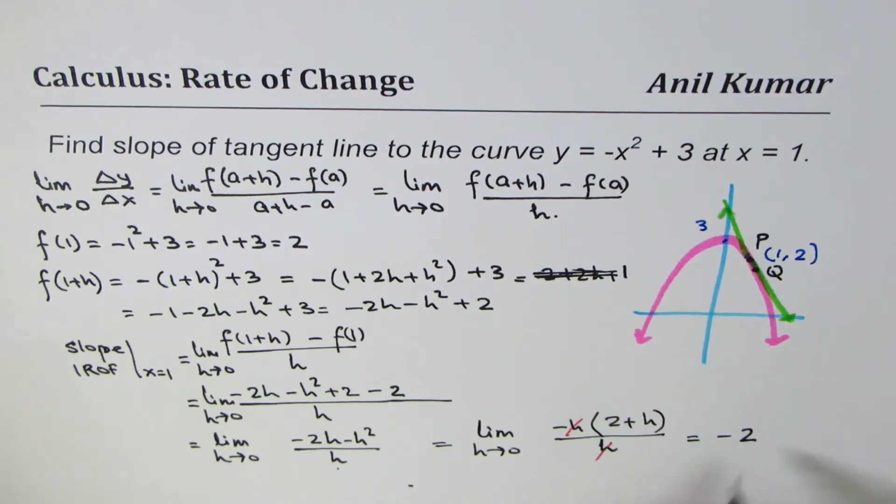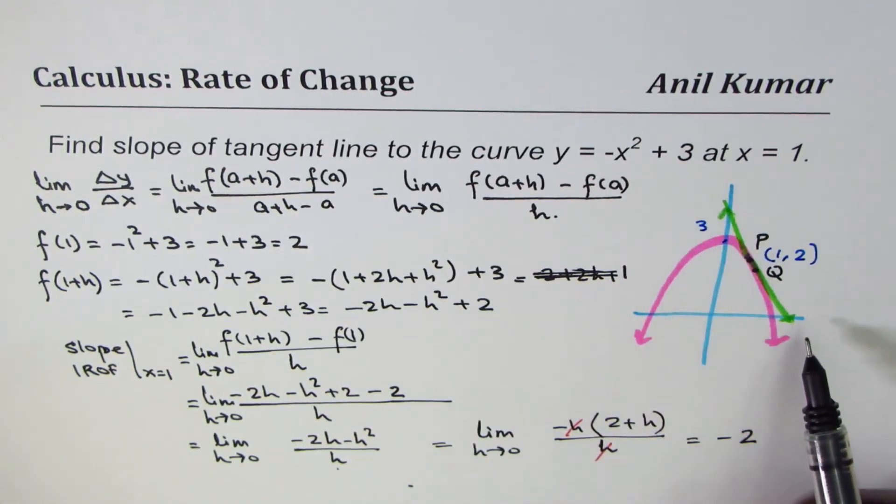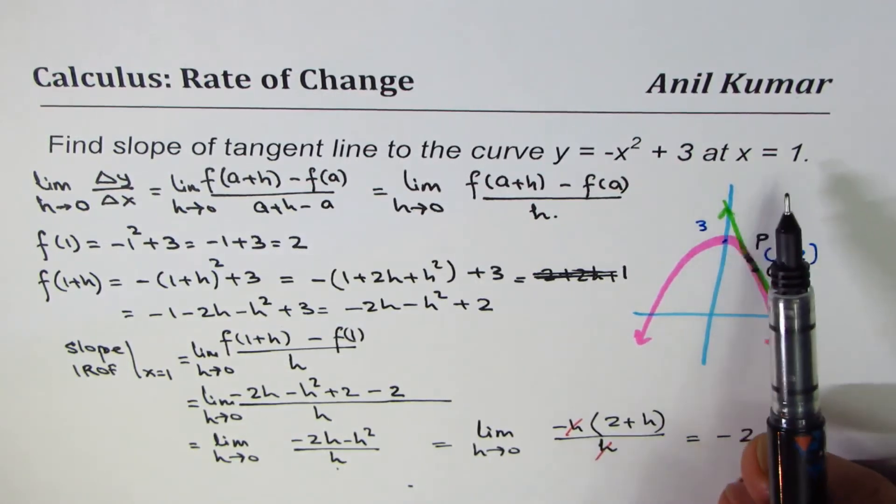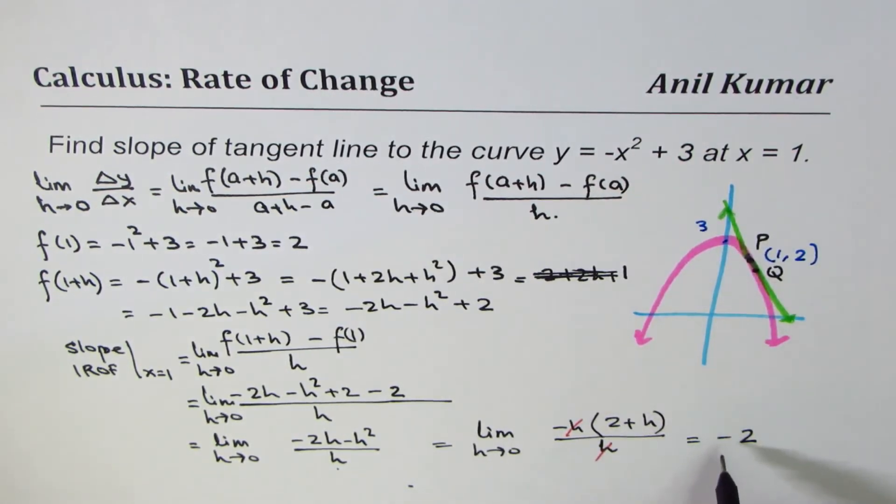So we get -2. So the slope of this tangent line at x = 1 is -2. So that becomes the solution or the slope of the tangent line at a given point.